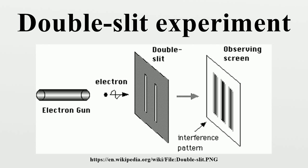The top portion of the image on the right shows the central portion of the pattern formed when a red laser illuminates a slit. If one looks carefully, two faint side bands can be seen — more bands can be seen with a more highly refined apparatus. Diffraction explains the pattern as being the result of the interference of light waves from the slit. If one illuminates two parallel slits with a more intense red laser, the light from the two slits again interferes, producing a more pronounced pattern with a series of light and dark bands.